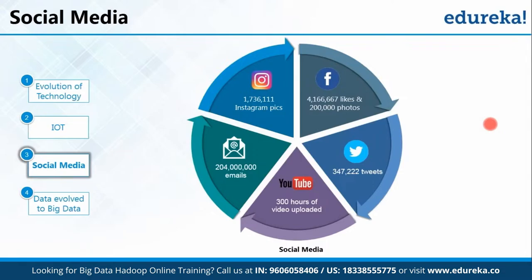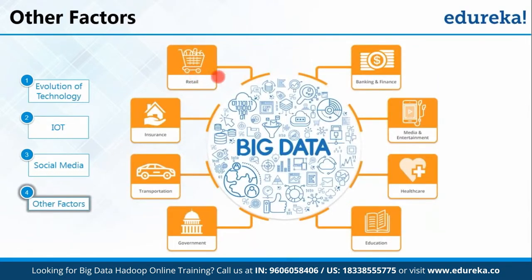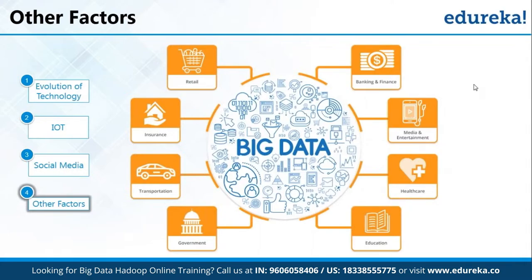These are just a few examples — there are many other driving factors for the evolution of data, including retail. When you visit websites like Amazon or Flipkart, your search history gets stored, your purchase history is saved, and there are numerous ways you might not even know you're generating data. Data has also evolved due to banking and finance, media and entertainment, and many other sectors. So now the question is — what exactly is big data? How do we consider data as big data? Let's move forward and understand.